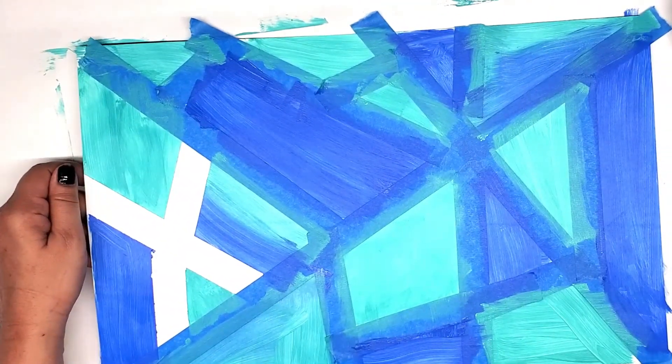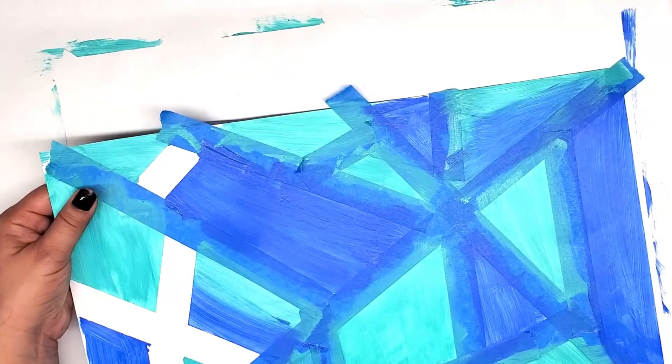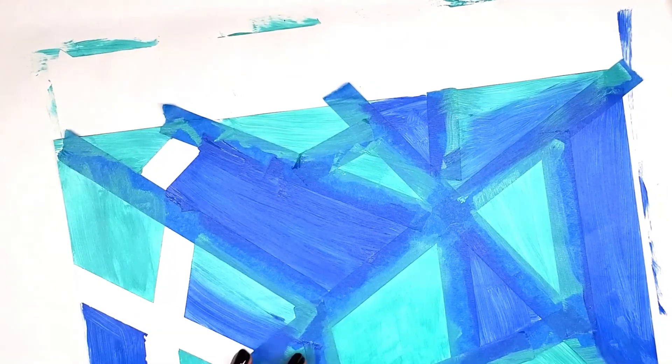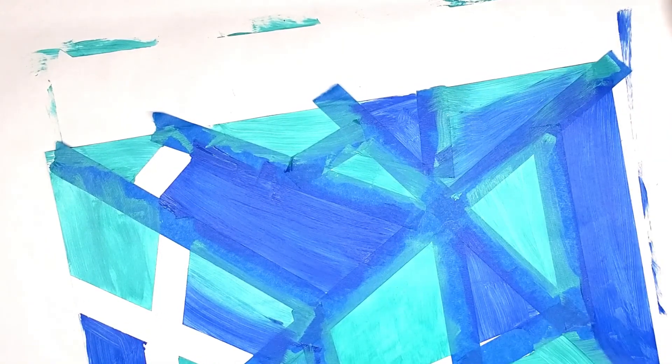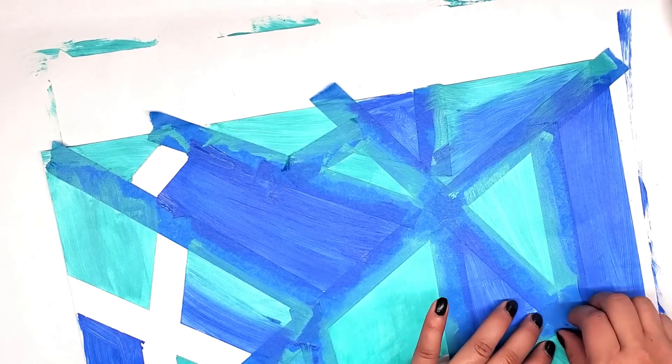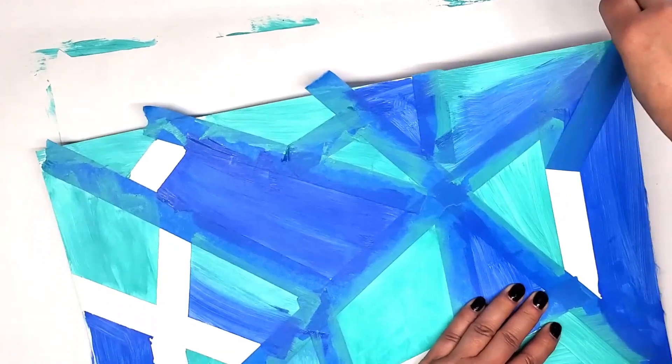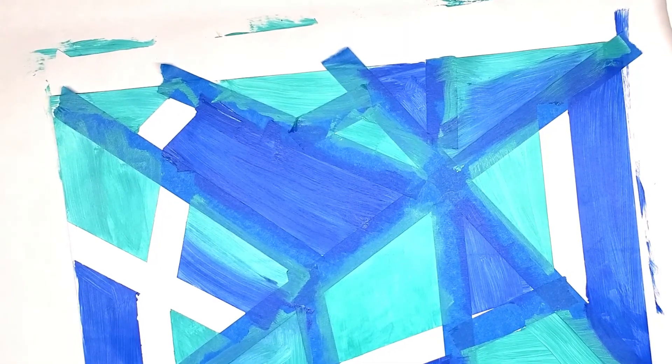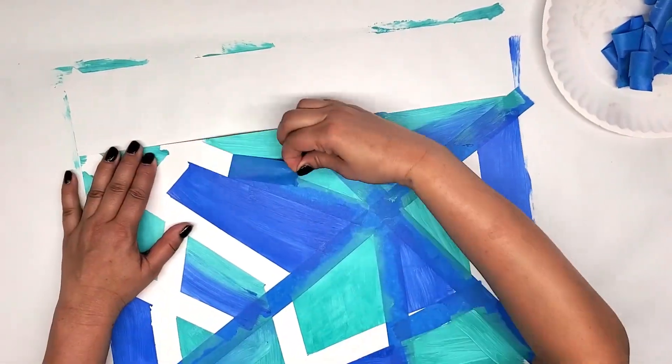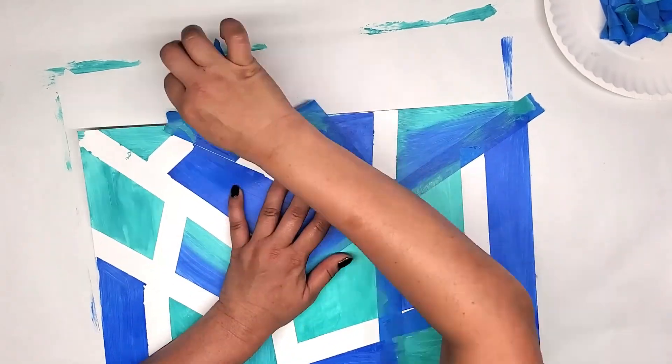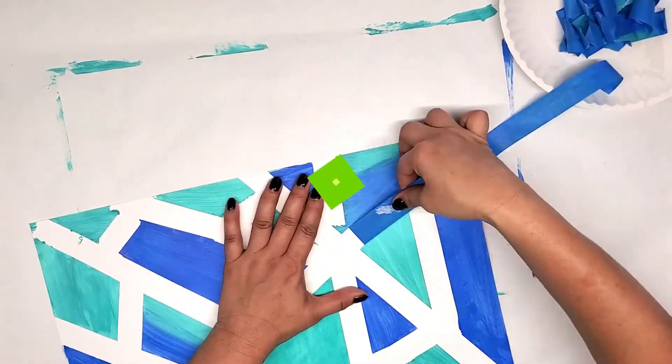This method actually is called tape resist and we are creating an abstract pattern with this. It just makes very clean lines. Okay, I'm going to speed up this process and just be careful taking your tape off. If the cardstock tears a little bit, don't worry about it.